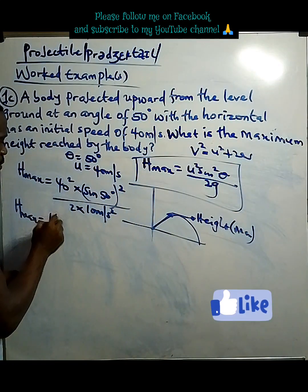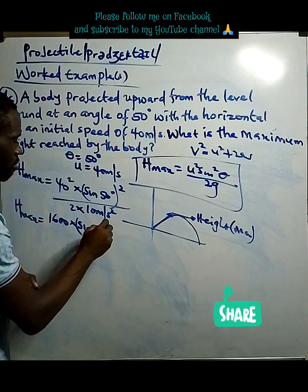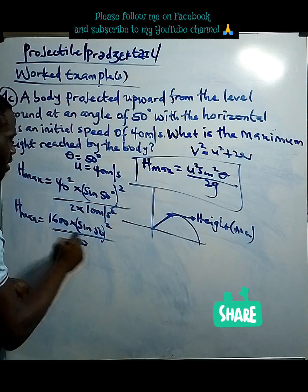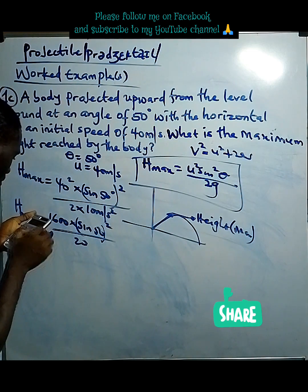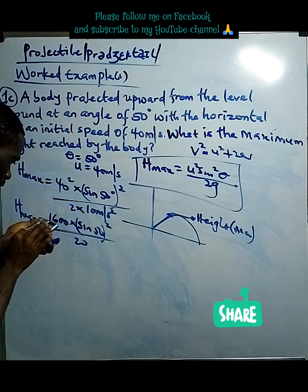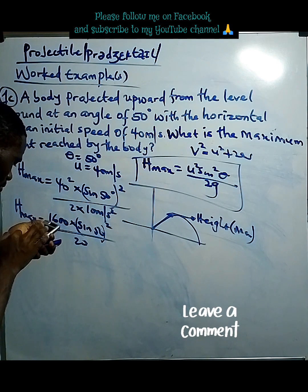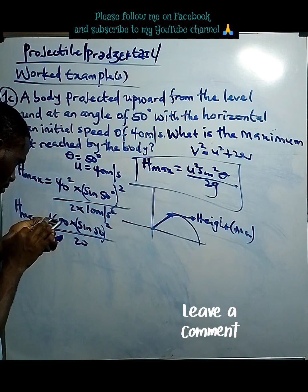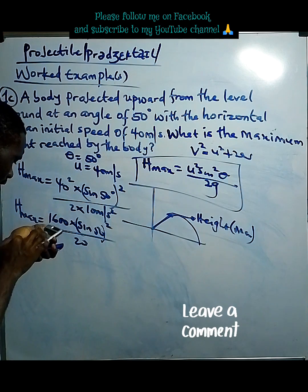So we compute: 1,600 × sin²(50°) divided by 20. We use the calculator: 1,600 times sine 50 times sine 50, then divided by 20.